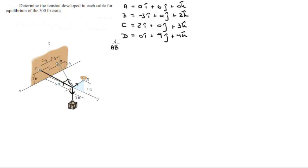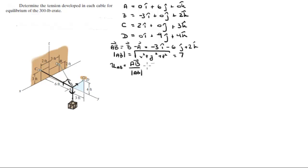We're going to find unit vectors aiming in all the directions of the forces involved in the system. Starting with AB: vector AB = B − A = (−3i − 6j + 2k). The magnitude of AB = √((-3)² + (-6)² + 2²) = exactly 7. The unit vector AB = AB/|AB| = (−0.429i − 0.857j + 0.286k).